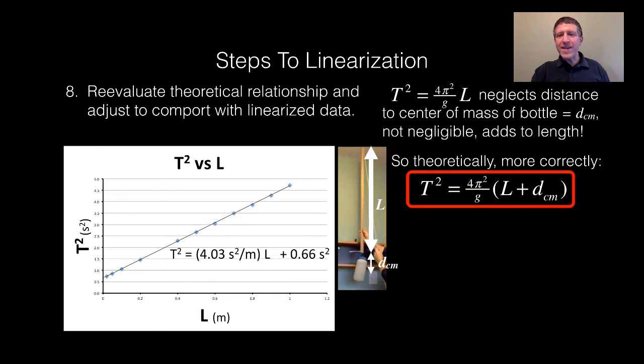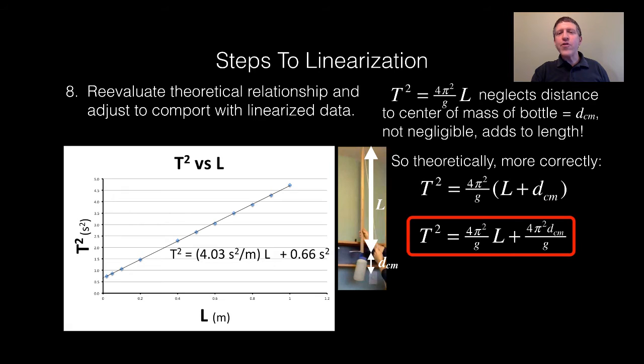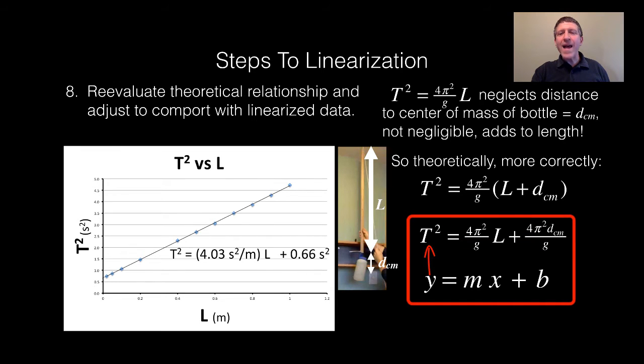I'm going to rewrite this like this. Now, notice how that can map perfectly onto y equals mx plus b. Notice that, as before, the slope still lines up with 4π²/g. Let's go on to the next slide and see what to do with this.